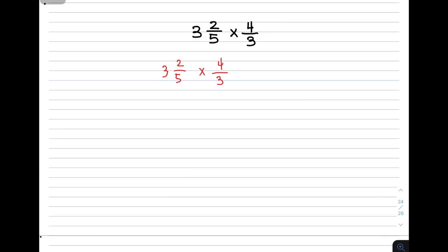In converting a mixed number to improper fraction, you need to multiply then add. Copy the denominator of 5. For the numerator: 3 times 5 is 15 plus 2 equals 17. So we have 17 over 5 times 4 over 3.